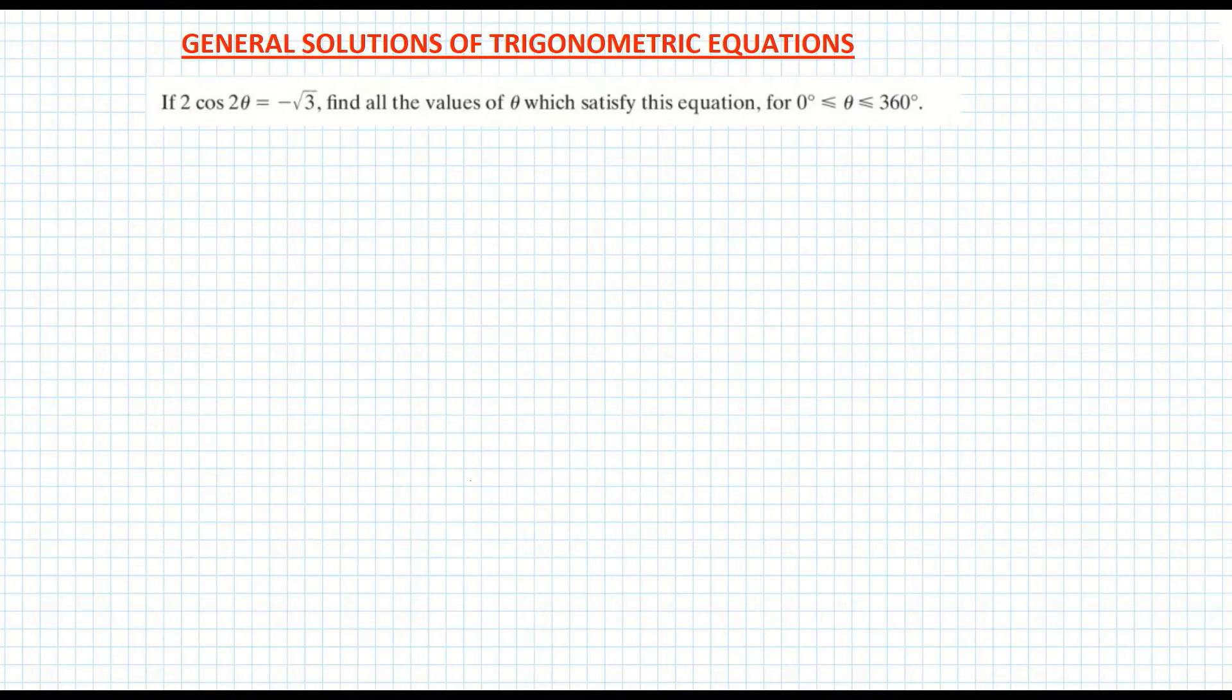In this particular example we're trying to find the values of theta which satisfy this equation between 0 and 360 degrees. First thing I'm going to do here with my equation is divide across by 2 because I want to isolate that factor of 2. So I'm basically just dividing across by 2 but first of all I'm going to write down my equation here.